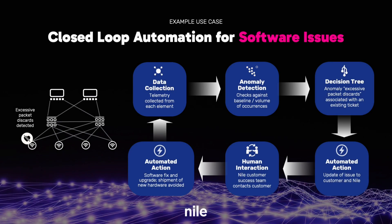In this example, one of the access points experienced an unusual increase in number of packet discards. We will see how Nile automatically corrects the situation. After successful installation, the Nile Services Cloud creates a digital twin of the topology. Smart agents deployed in Nile network elements continuously collect the telemetry data and stream it to Nile Services Cloud. The collected data includes process information, system information, protocol information, etc. This telemetry data hydrates the digital twin, updating various attributes such as the interface, CPU, memory, etc.